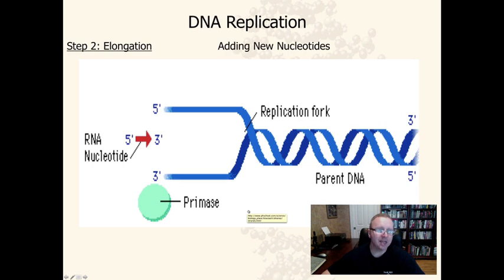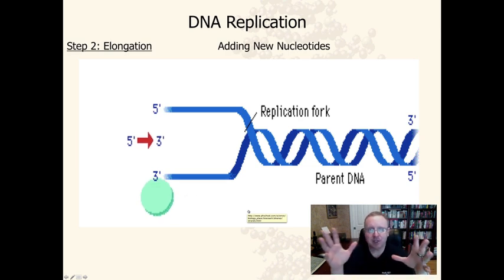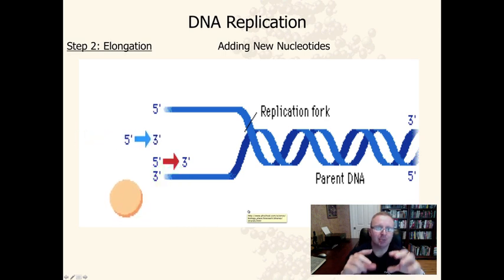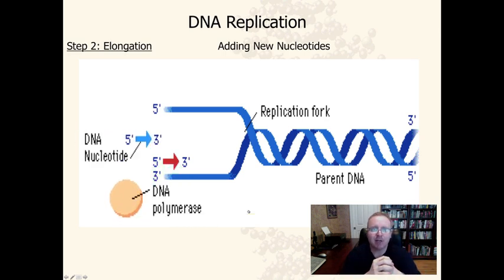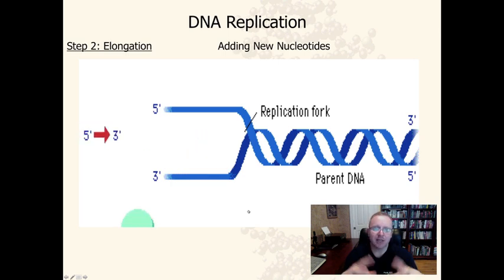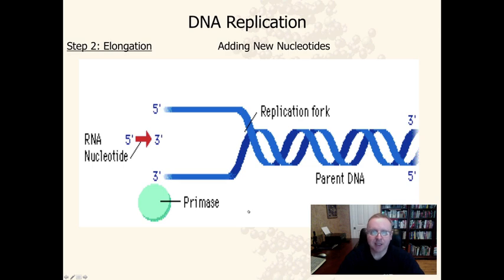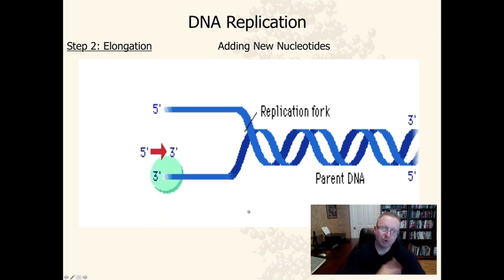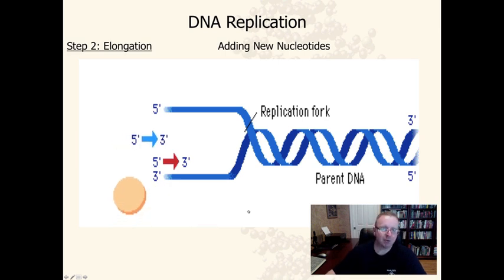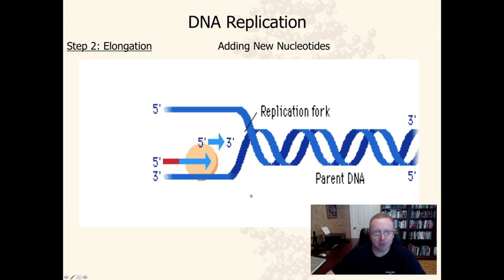This animation will focus on the beginning of step two, which is called elongation. Elongation is a fairly complex process involving adding new nucleotides, and it represents the majority of the DNA replication process. Watch the animation and notice the primase, the RNA primer, DNA polymerase, and the DNA nucleotides being added, as well as the replication fork and the 5' and 3' labels.